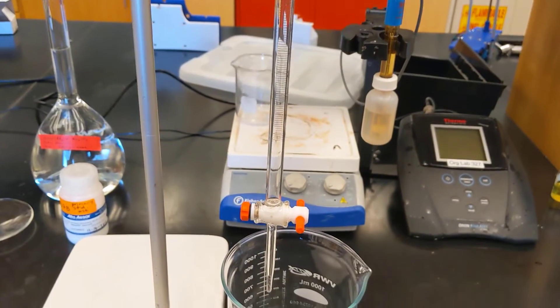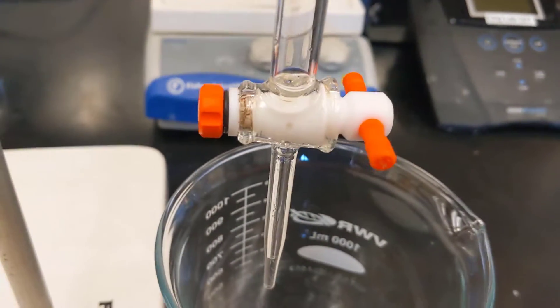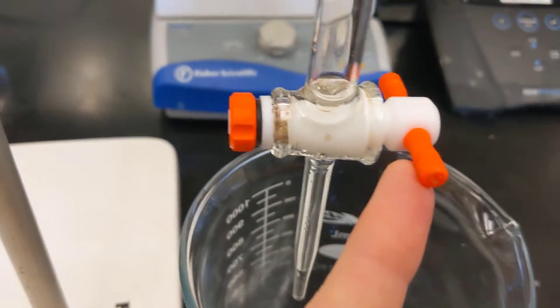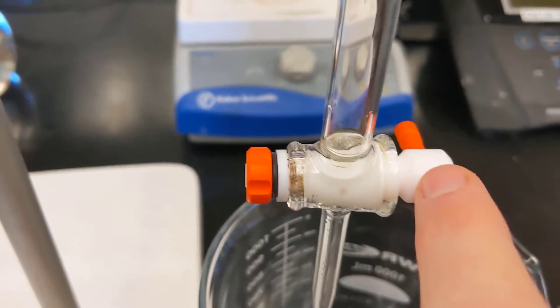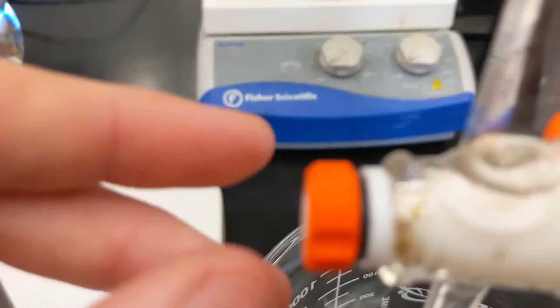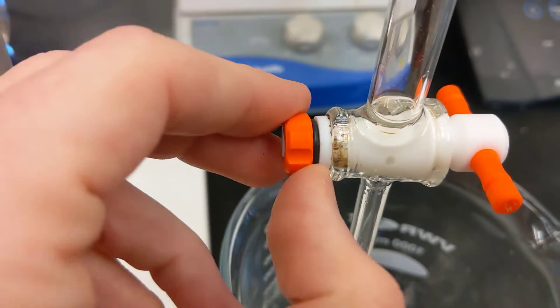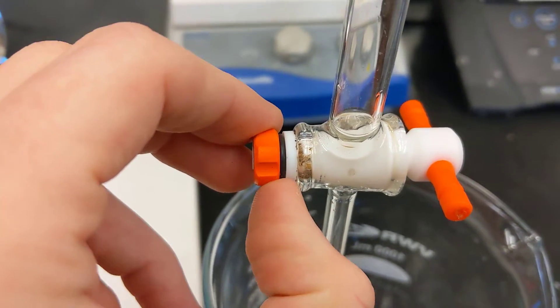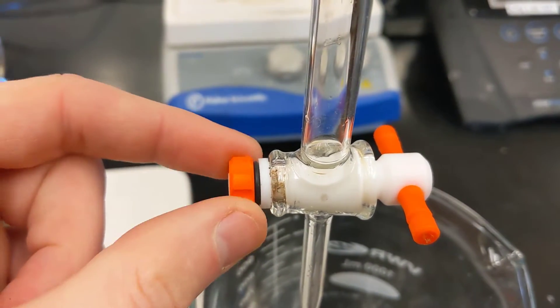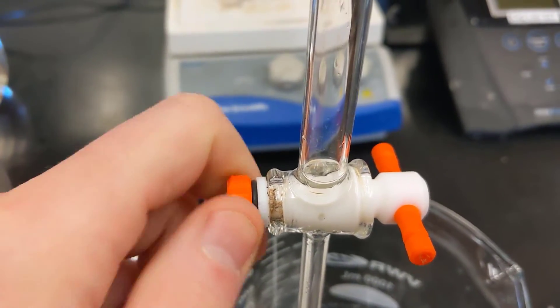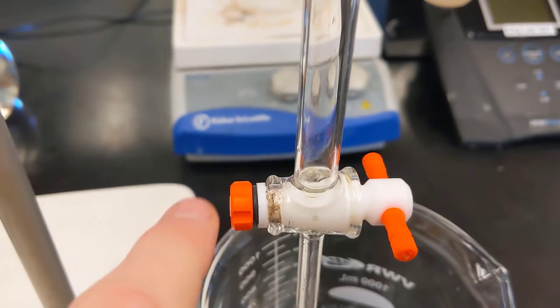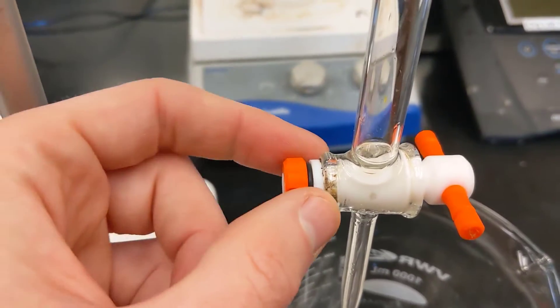And then you want to make sure to inspect your stopcock, make sure it's assembled correctly. So you can see the Teflon stopcock. There's nothing on this right side. It gets pushed through. And then on this other side, there is a Teflon washer, which is that first white band. Then you have the O-ring, and then you have this lock nut. So if I were to unscrew this lock nut, this would come out as an assembly of several different parts. So you just want to make sure it's assembled correctly.